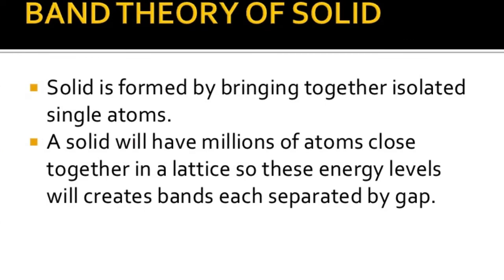What is the band theory of a solid? We know the kinds of bands: conduction band, valence band, and forbidden energy gap. A solid is formed by bringing together isolated single atoms. If atoms are far apart, there is no interaction between them and the energy levels are the same for each atom. When atoms are close together, the electron wave functions overlap and energy levels shift. In a solid with millions of atoms in a lattice, these energy levels combine to create bands, each separated by a gap.